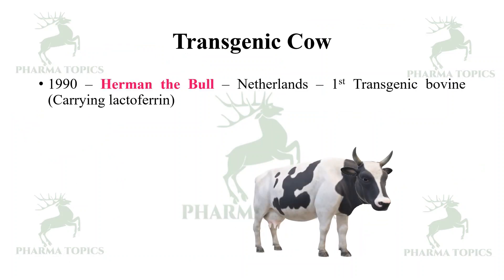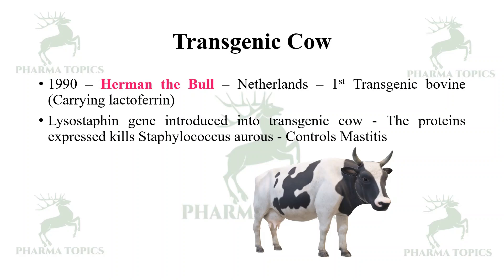The next transgenic animal is the transgenic cow. In 1990, Hermann the bull from the Netherlands became the first transgenic bovine, carrying the lactoferrin and lysostaphin genes. The proteins expressed by these genes kill Staphylococcus aureus, which helps control mastitis in cows.